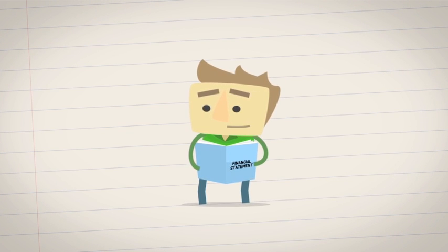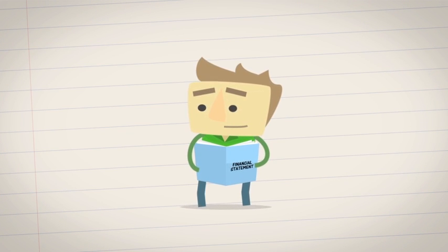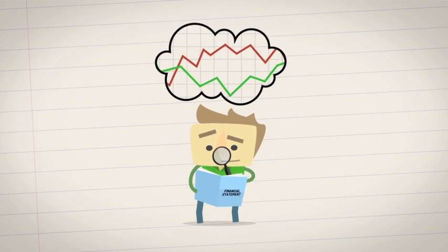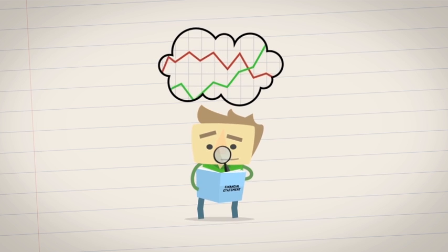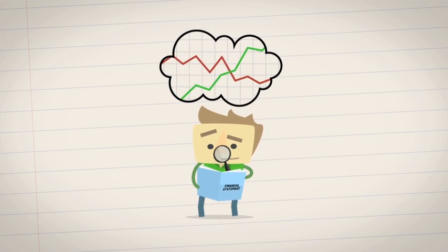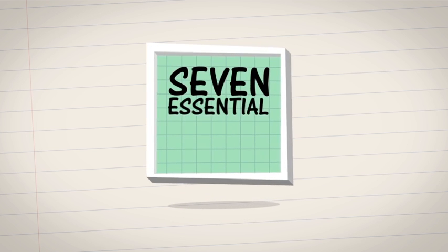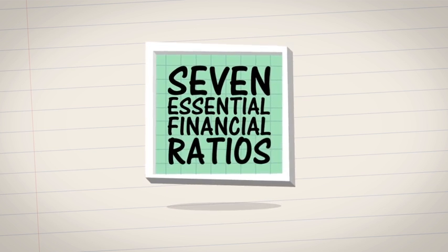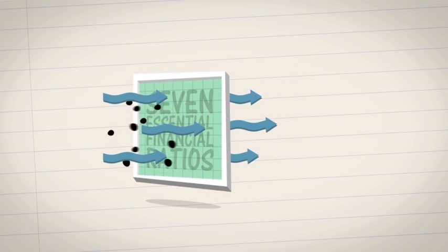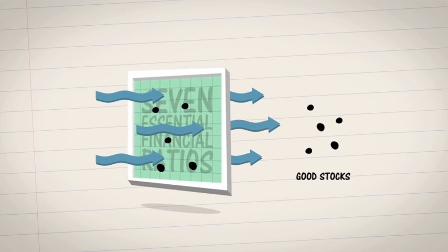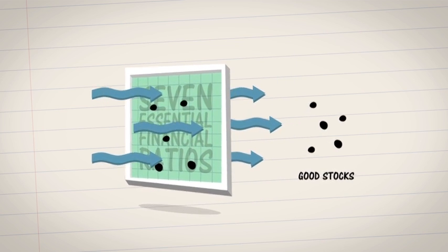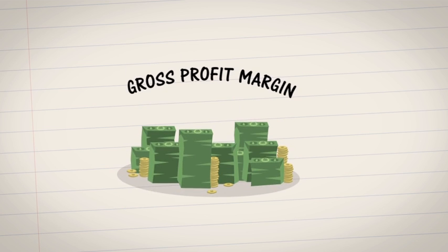Reading financial statements is one thing — analyzing them and deciphering their true meaning is another. To do that, you need to understand the seven essential financial ratios. They're like a shortcut for filtering out good stocks.